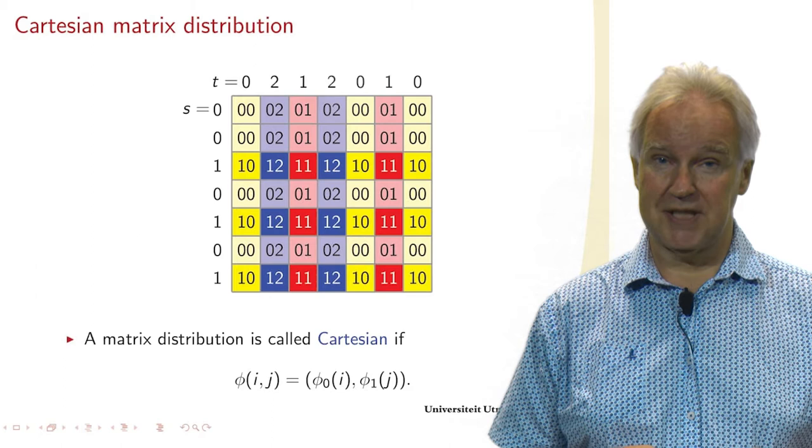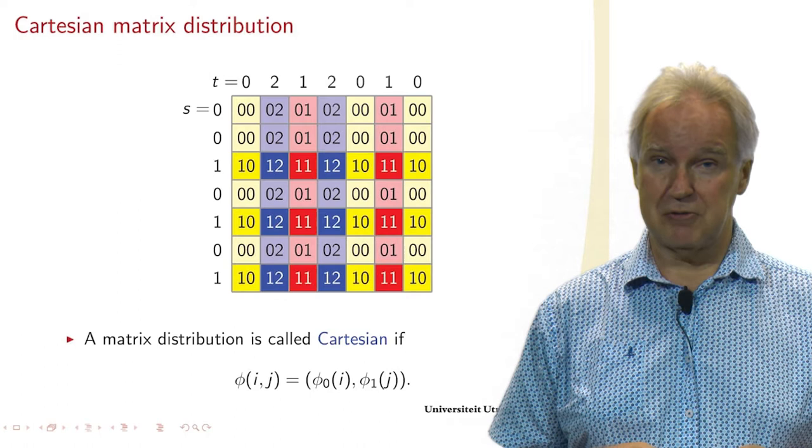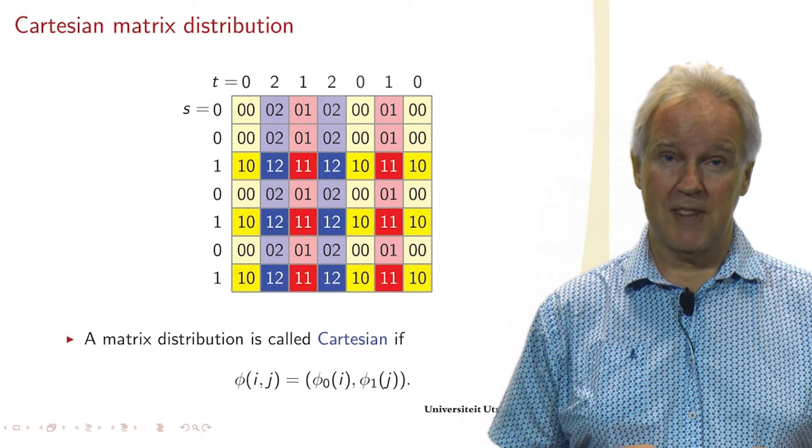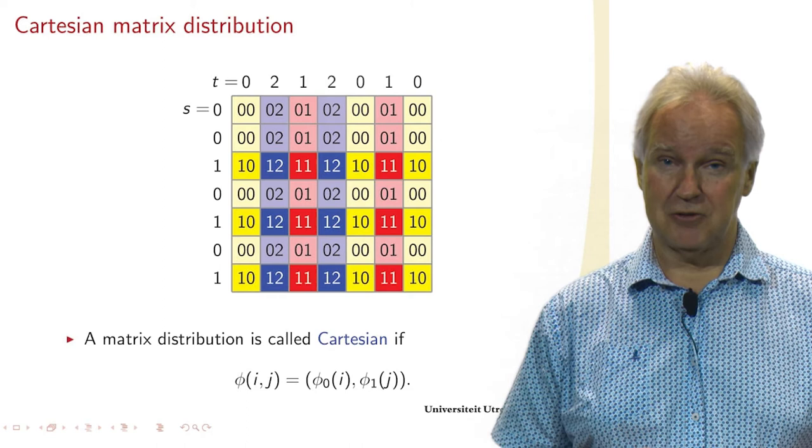So this is an example you see above. You see that we have two processor rows, 0 and 1. We have three processor columns, 0, 1, and 2. And here you see the elements that are assigned to a processor.